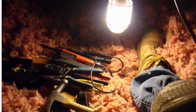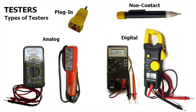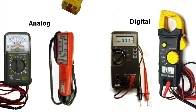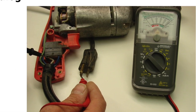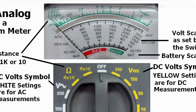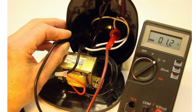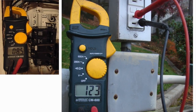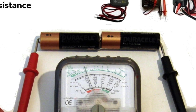Then we get into testers: plug-in testers, non-contact testers, and analog and digital testers. We give you a rundown of how those are used on the job, the different settings, and the different items you can test. Testers are basically one of the most important tools on your pouch and we stress how the meters are used along with the different on-the-job applications.